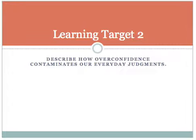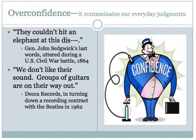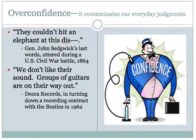Our second learning target describes how overconfidence can contaminate our everyday judgments. Here are some funny examples: 'They couldn't hit an elephant at this dis—' — those were General John Cedric's last words during a Civil War battle in 1864. And Decca Records turning down the Beatles in 1962, saying 'Groups of guitars are on their way out.' As humans, we have a tendency to be overly confident and think we know more than we do.